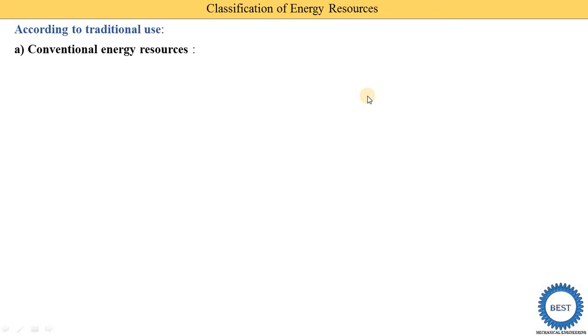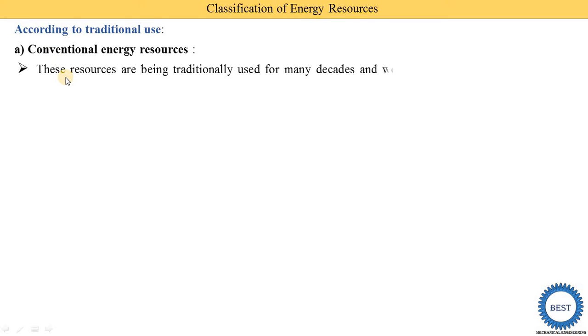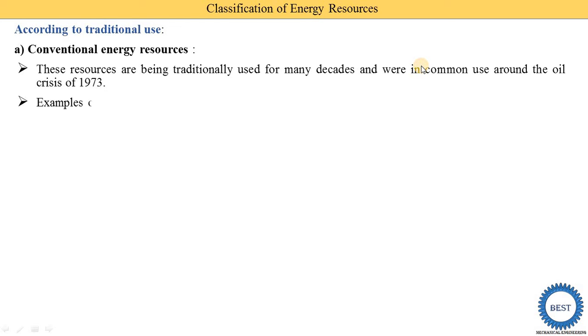The second classification is according to traditional use. Traditional use means which fuels have been used for the past few decades. According to traditional use there are two types: conventional and non-conventional. Conventional energy resources are those which have been traditionally used for many decades and were in common use around the oil crisis of 1973. Resources used before 1973 are called conventional energy resources, and examples are fossil fuels, various petroleum products and gases, nuclear, and hydro resources.